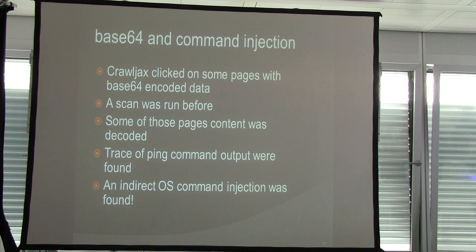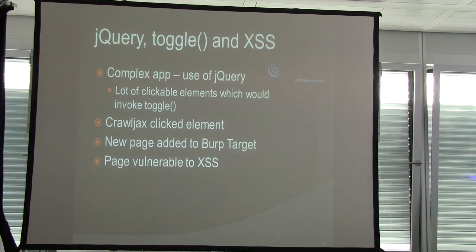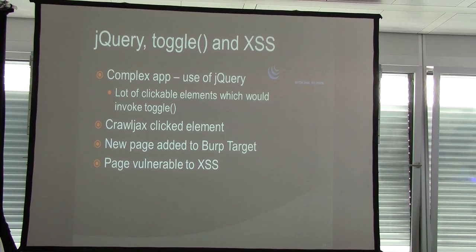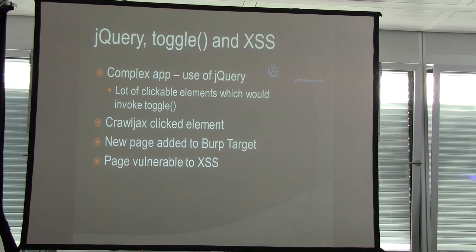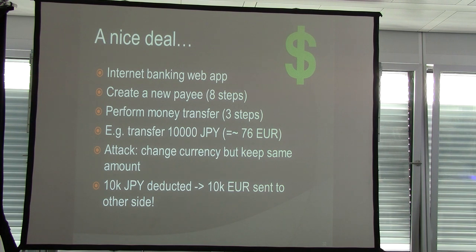Another story: this application was making heavy use of jQuery. For each thing you clicked, you weren't really clicking on an anchor element — you were clicking on divs or span elements, which invoked a toggle function, which called something else, which called a URL. If I just left Burp spidering, I wouldn't get what the URL would be from clicking that element. Again, using CrawlJax, it clicked on those elements, revealed the URLs, and one of those pages was vulnerable to cross-site scripting. If you just rely on proxy technology, this kind of bug would be missed.